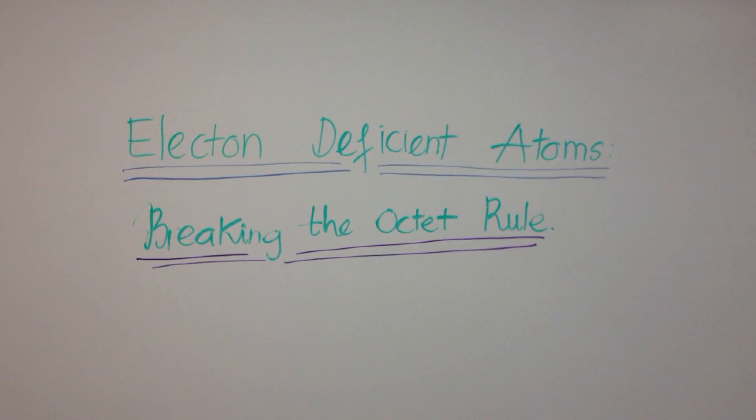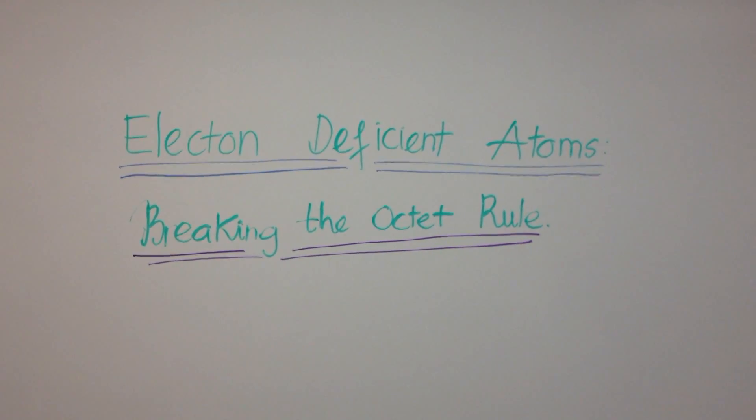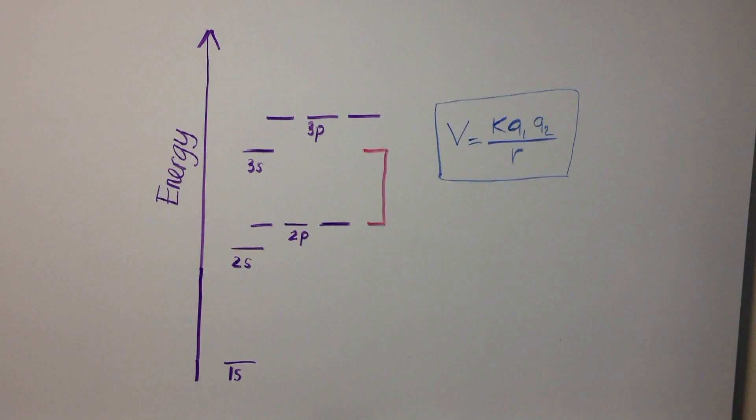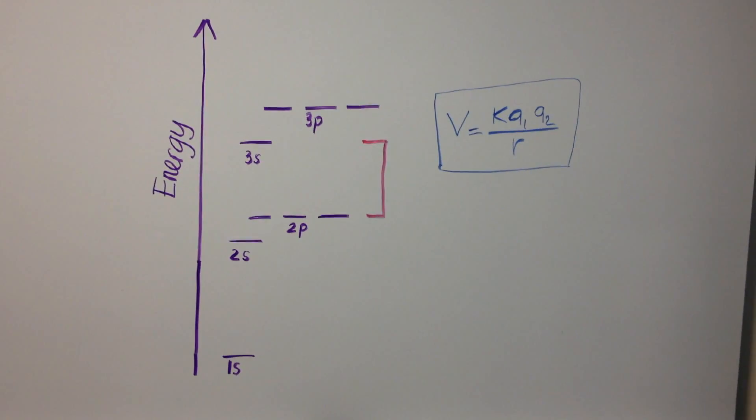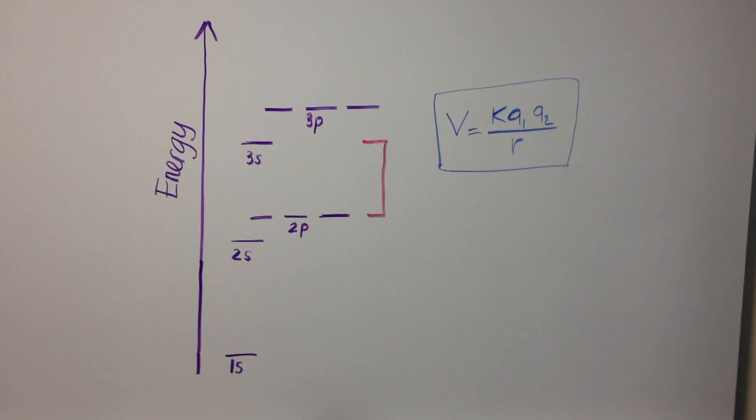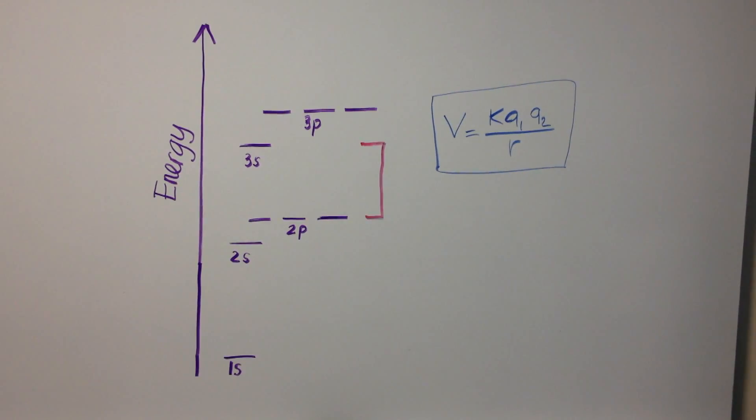First, we must explain the octet rule that these molecules break. The octet rule is the tendency for atoms and molecules to bond with other atoms such that each atom has 8 electrons in its valence shell. This tendency arises due to two main effects.